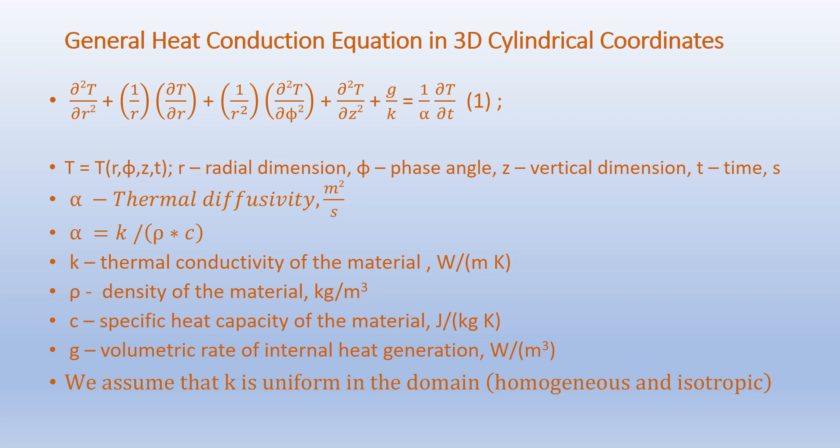Here, c is the specific heat capacity in joules per kilogram kelvin, and g is the volumetric rate of internal heat generation in watts per meter cube. We assume that thermal conductivity k is uniform in the domain — that is, the material is homogeneous and isotropic.